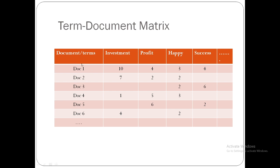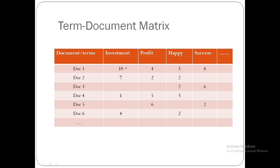Here is how the document-by-term matrix is formed. The terms are: investment, profit, happy, success. In document 1, the word 'investment' occurs 10 times, 'profit' 4 times, 'happy' 3 times, 'success' 4 times — indicating that if a person is investing money, they will earn profit, be happy, and be successful. In document 2, 'investment' occurs 7 times, 'profit' 2 times, 'happy' 2 times, and 'success' is not used, perhaps indicating it was not yet successful.